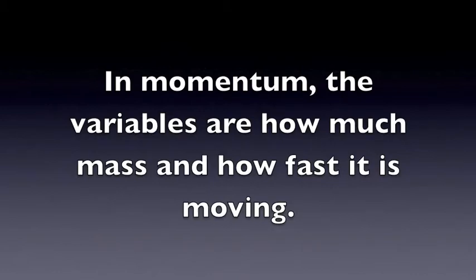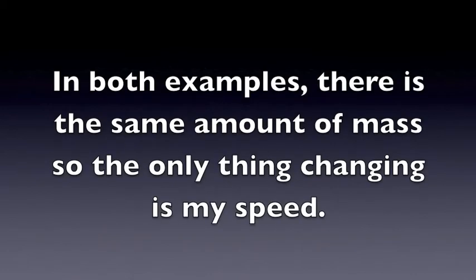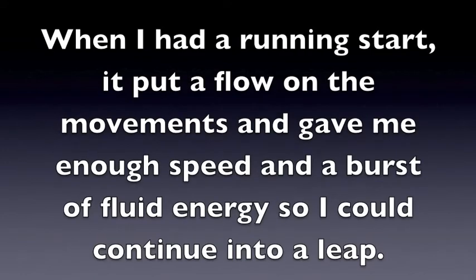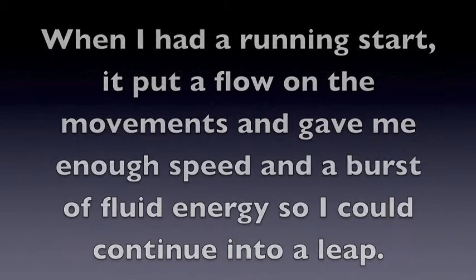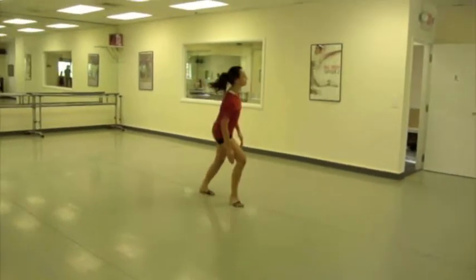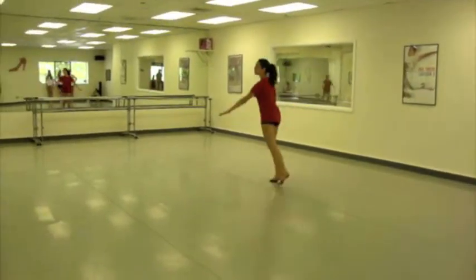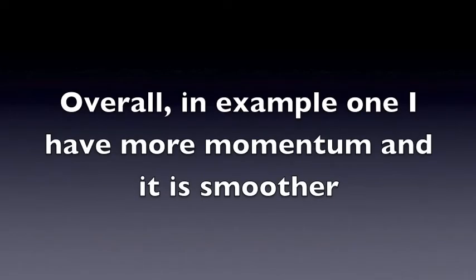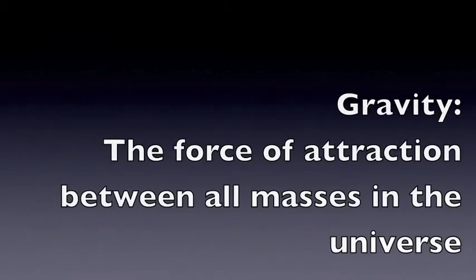Momentum variables are how much mass and how fast it is moving. In both examples, there is the same amount of mass, so the only thing changing is my speed. When I had a running start, it put a flow on the movements and gave me enough speed and a burst of fluid energy, so I could continue into a leap. Overall, in example 1, I have more momentum and it is smoother.